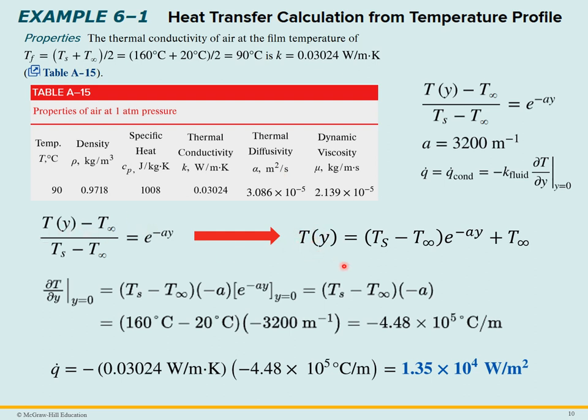We can solve this equation for T sub Y. To find Q dot, we take the derivative of T with respect to Y. If we take this derivative, the constant drops out. We've got a constant times an exponential, so the minus A comes down and multiplies the exponential. When Y equals 0, this term goes away, so we're left with this term. We can plug in our values: Ts is 160, T infinity is 20, A is 3200, so we can calculate this partial derivative value. Finally, we can plug it in and find what Q dot is because we know what K is from the table. We get 1.35 times 10 to the fourth watts per square meter.